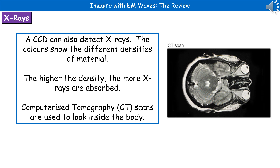Another type of scan that relies on X-rays is computerised tomography, or CT scans. These are quite useful because they take slices through the body without actually having to slice it. You can see an example of a CT scan through the skull on the right, showing the eyeballs and everything. CT scans reveal detailed information about small sections taken through the body.